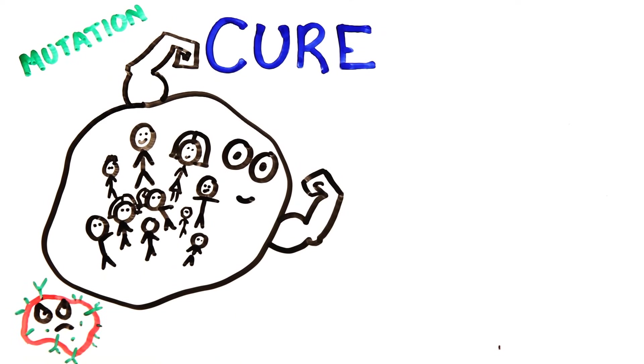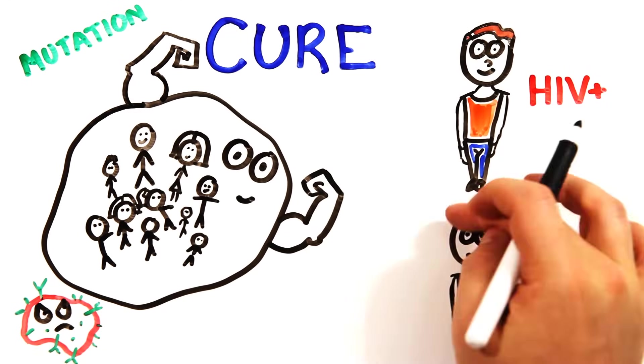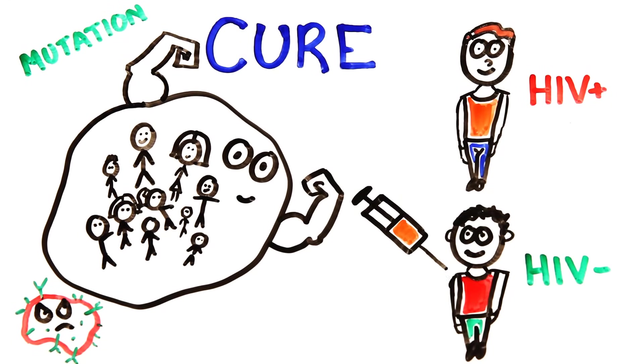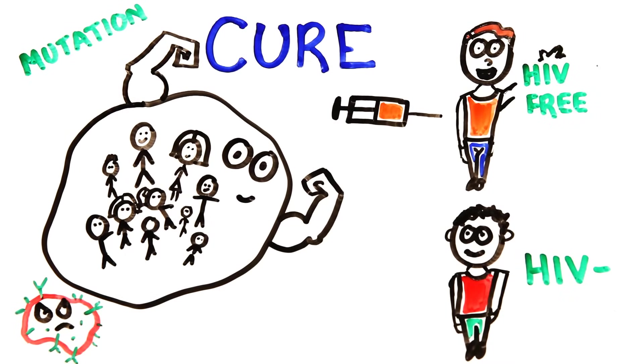In one case, an HIV-positive subject received a bone marrow transplant, meaning they were given new stem cells that generate different T cells, and within 20 months there was no evidence of the virus in their bloodstream. Though this is very individualized medicine, it certainly opens up the possibilities of generating HIV-resistant cells.